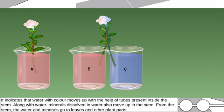Along with water, minerals dissolved in water also move up in the stem. From the stem, the water and minerals go to leaves and other plant parts.